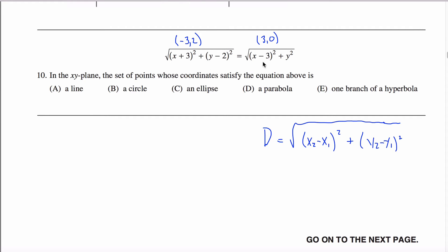Now, so really what this is asking you is for the set of all points X, Y that are equidistant. That the distance from this point is the same as the distance from this point.